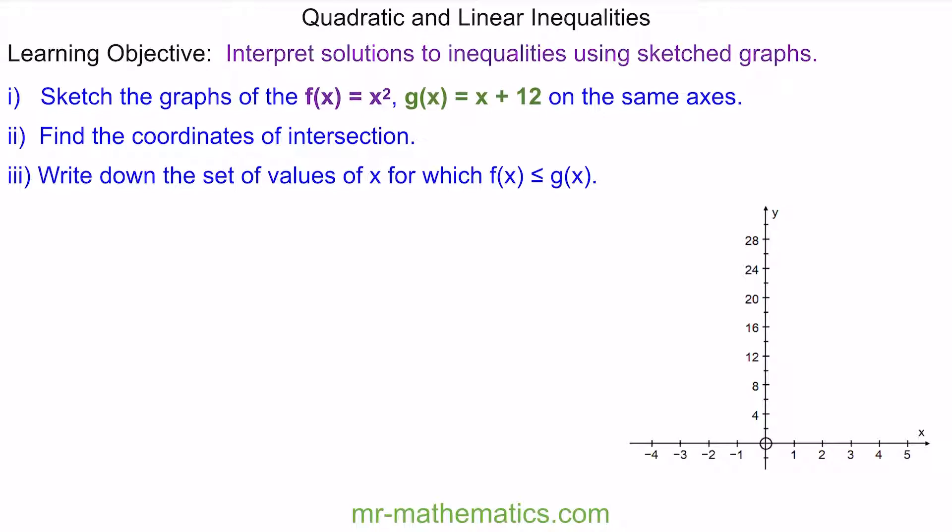We'll begin by sketching the two graphs, which you can see here. Now you can see there are two points of intersection, here and here, and at these two points the y values of the two functions are the same. Because of this, we can say that x squared is equal to x plus 12.